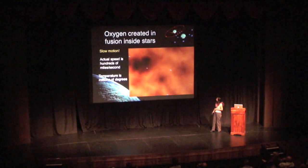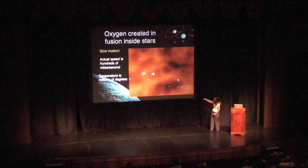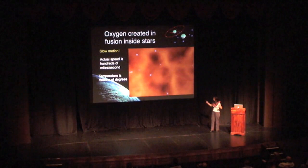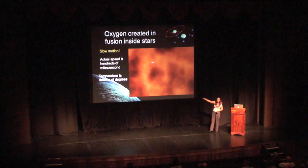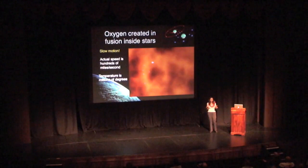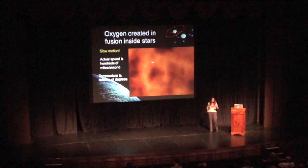Oxygen is formed inside stars. Looking at this simulation of what it might look like inside a star — it's actually mostly empty space, and the atoms are whizzing around pretty fast. Every now and then you'll see a bang where they hit each other and fuse together. These are protons and neutrons. The actual speed is hundreds of miles a second — this is vastly slowed down compared to how fast these protons and neutrons are moving inside stars. The temperature is millions of degrees, a massive furnace with a huge amount of energy, which allows these protons and neutrons to move so fast that sometimes they hit each other and fuse together.